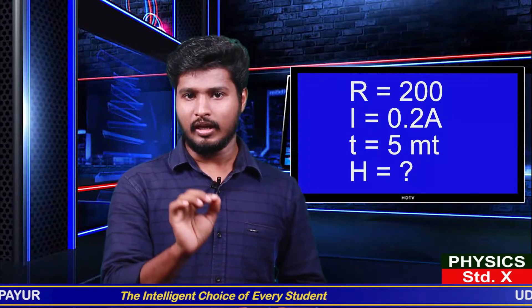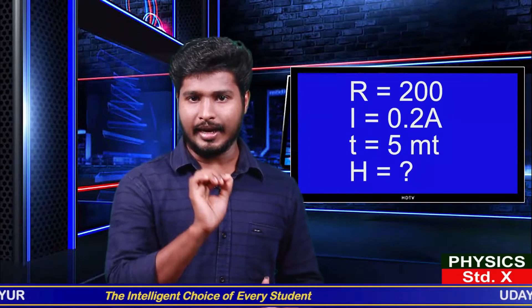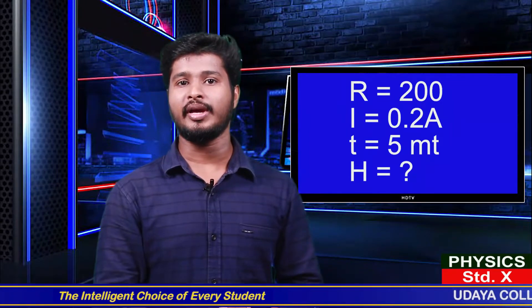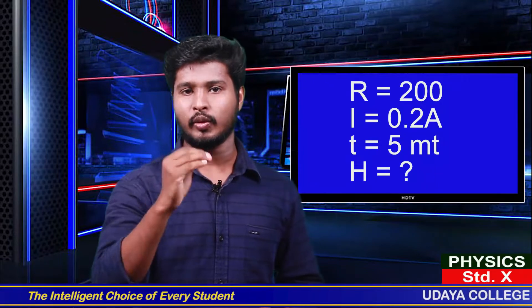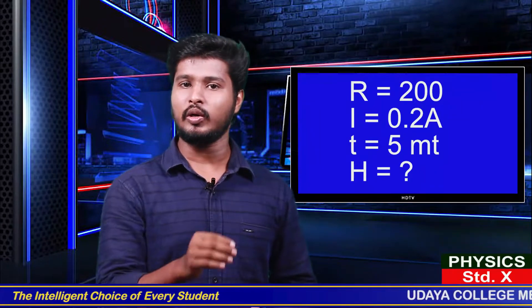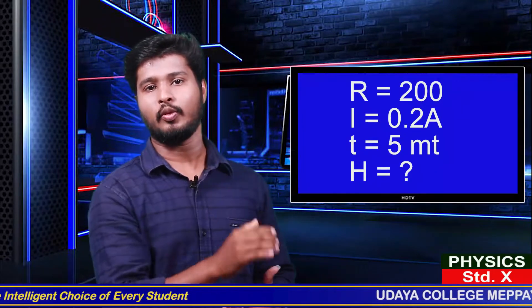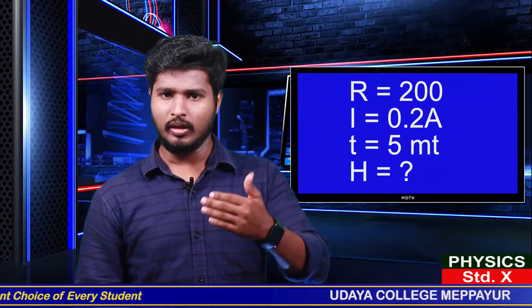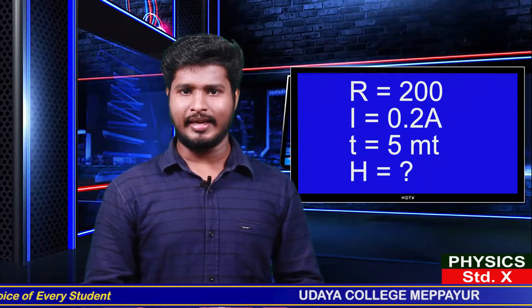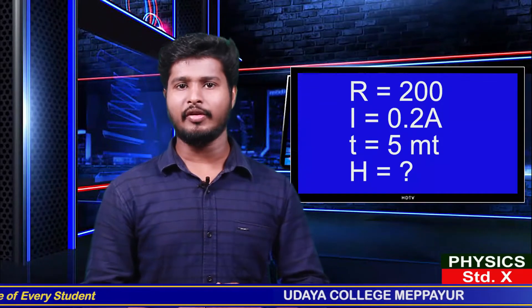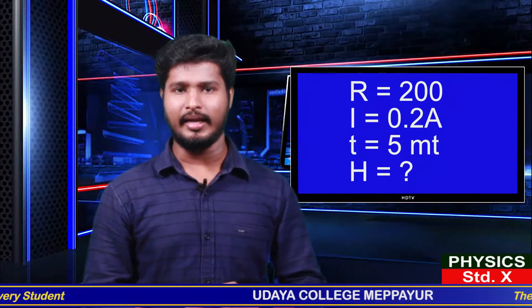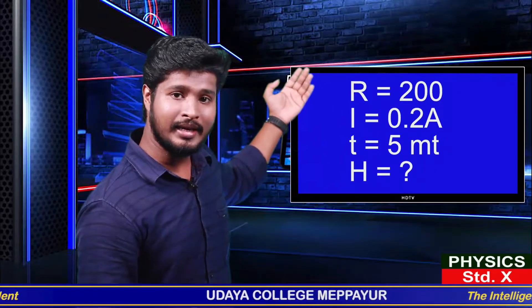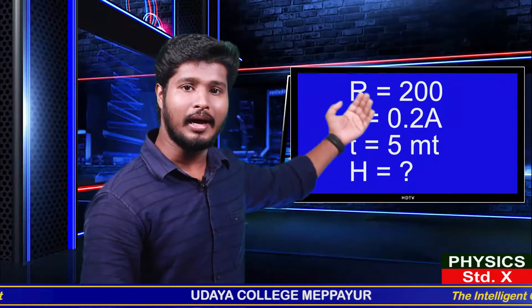2 amperes in a 5 minute time. What is the current unit? That is the current unit. I sum is 2. How much time is it? It is 500. T is 5 minutes.